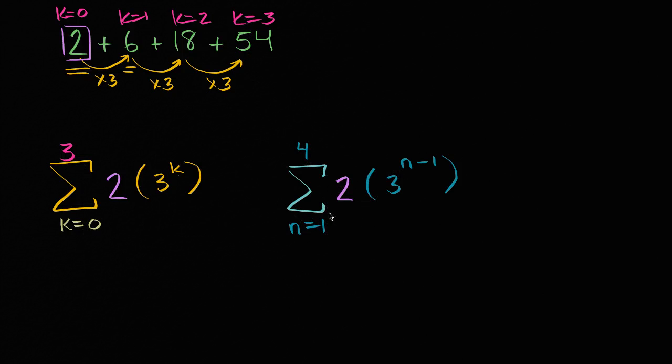Because when n equals four, it's three to the four minus one power. So it's still three to the third power, which is 27 times two, which is still 54. So this is n equals one. That is n equals two. That is n equals three. And that is n equals four. But either way, these are ways that you could write it using sigma notation.